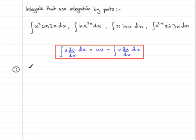So we'll start with the integral of x sine 2x with respect to x. And in this example, my u is going to be the x, and my dv dx is going to be the sine 2x.